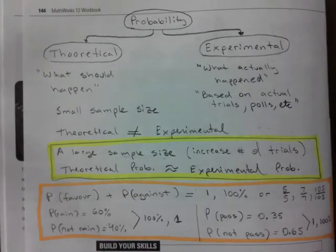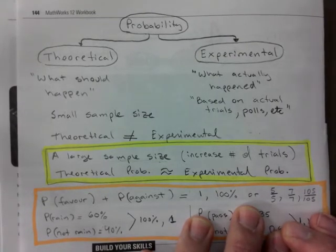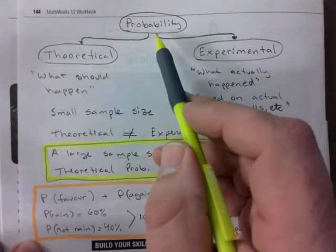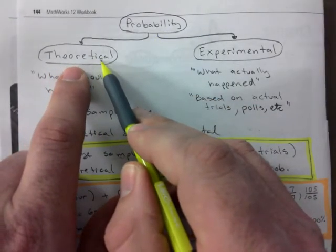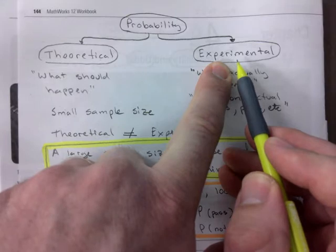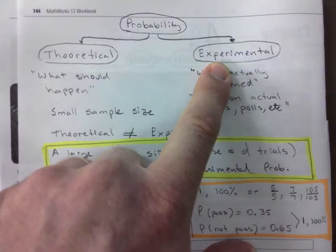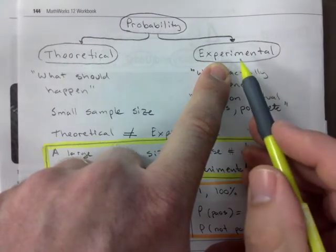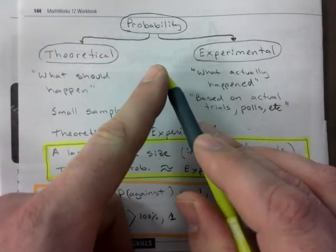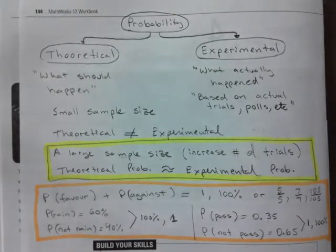A couple things I wanted to review: the book doesn't do a very good job making a distinction between them, but you always have to keep in mind that whatever probability we're talking about, it could be theoretical — what should be happening — or it could be experimental, based on what actually happened. Sometimes they'll mix it up and ask you what is it in theory and what is it as an experiment.